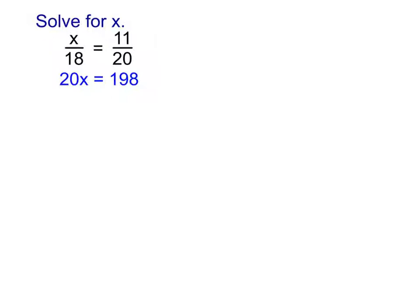Notice that by cross multiplying, we actually get rid of the fractions. Every now and then I'll see somebody who tries to write it like it's 20x over 198 or something like that — it's not that, it's equal. Because technically, what is going on behind the scenes when you cross multiply is we're actually doing two steps at once. We're multiplying both sides by 18 to get rid of that 18, and then multiplying both sides by 20 to get rid of that 20. So the 20 ends up multiplying by x, and the 18 ends up multiplying by the 11. That's what cross multiplying really is — it's a shortcut.